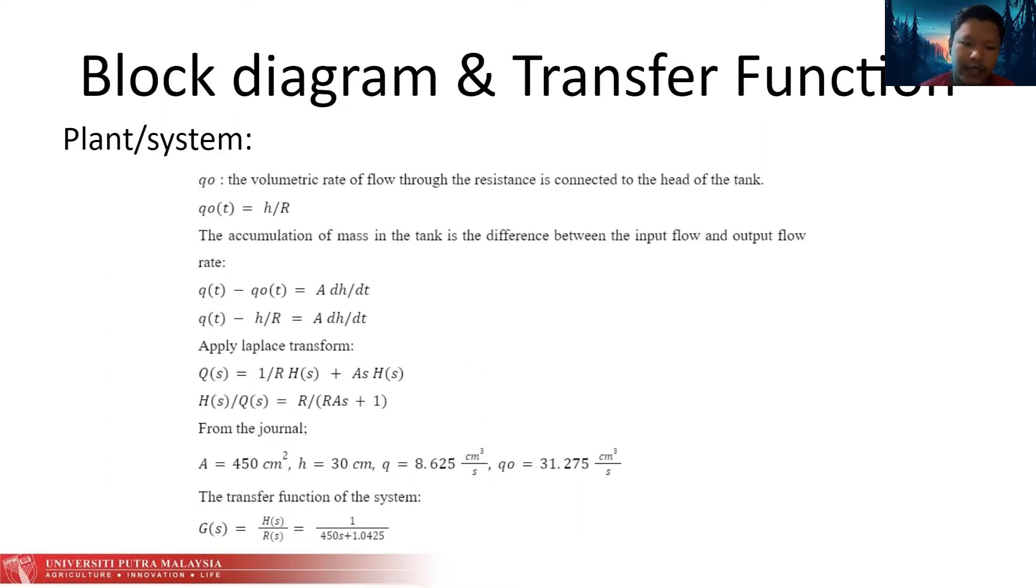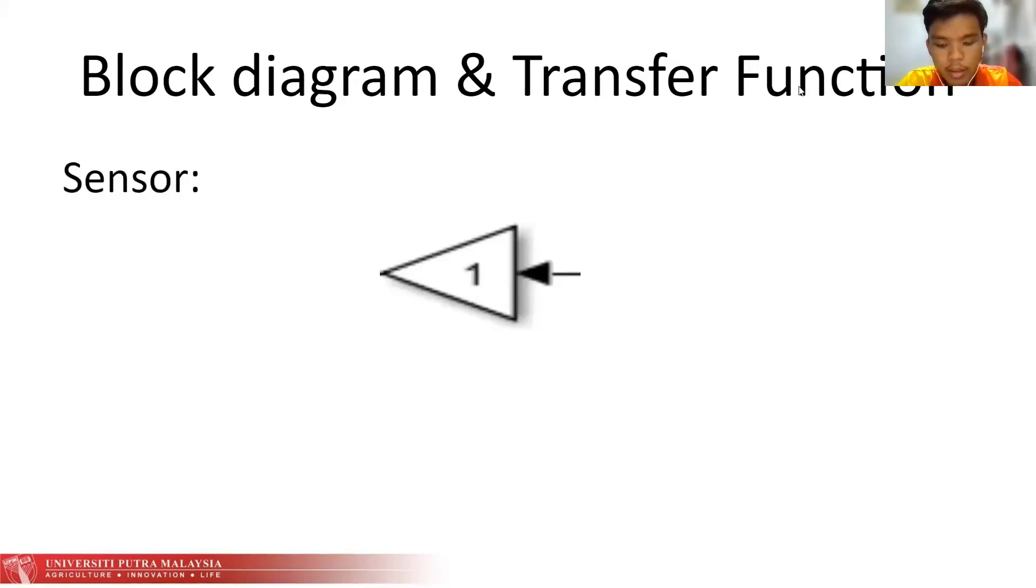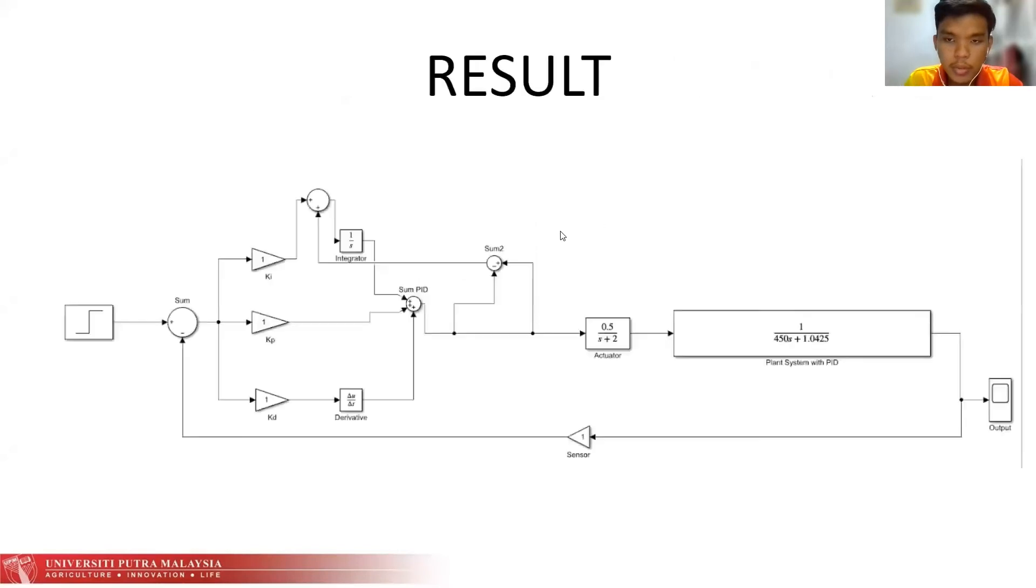Based on the parameters we found in our reference, we know that the area is 450, H is 30 cm, and Q and Qo as well. When we substitute all the given information, we get the transfer function G(s) equal to H(s) over Q(s) equal to 1 over 450s plus 1.0425. This is the transfer function for the system. For the sensor, a constant value was selected, and the number of the constant we use is 1. The sensor is also known as a feedback loop in the control system.